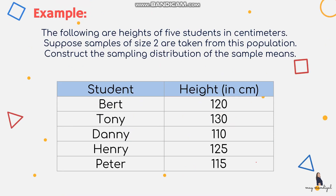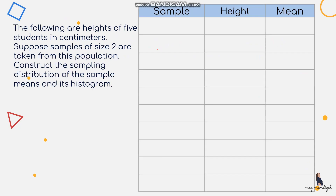Let's try this example: the following are heights of five students in centimeters. Suppose samples of size 2 are taken from this population — construct the sampling distribution of the sample means. We have five students: Bert, Tony, Danny, Henry, and Peter, with heights 120, 130, 110, 125, and 115 centimeters respectively. We need to consider samples of size 2, so out of five we consider two at a time. First, let's solve for all possible samples.